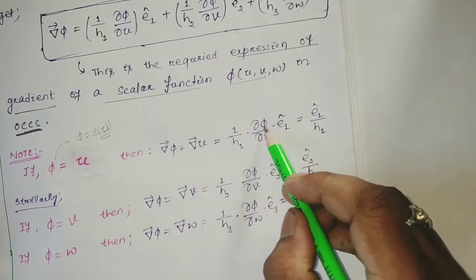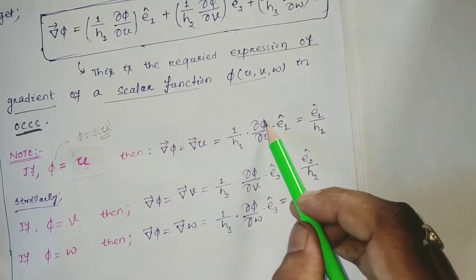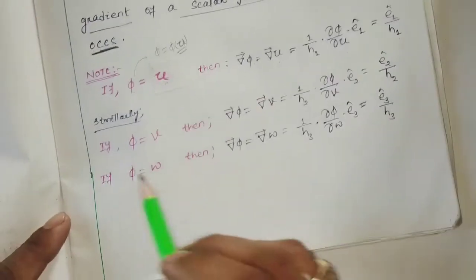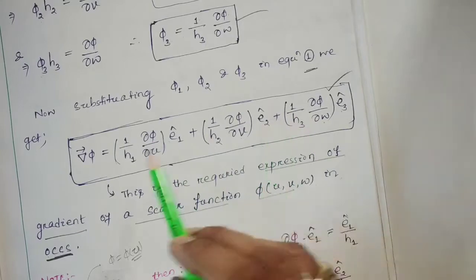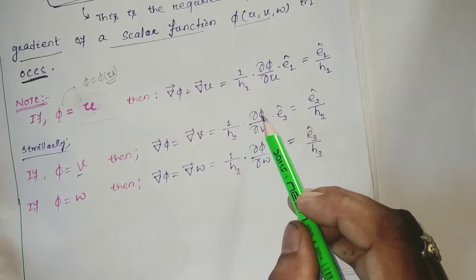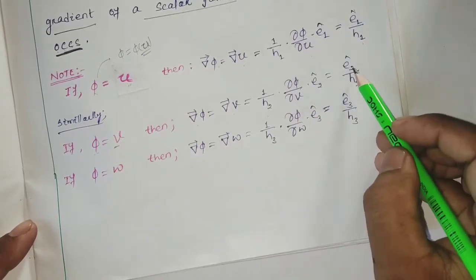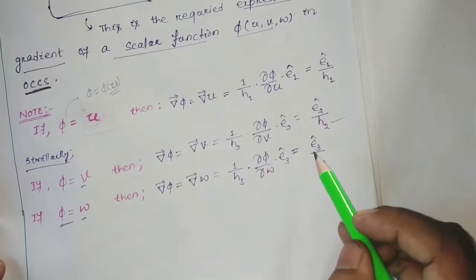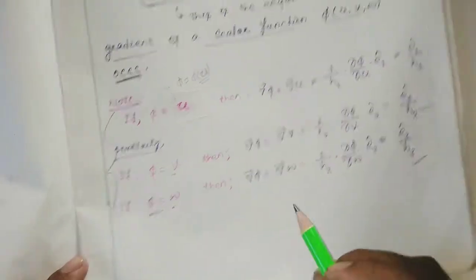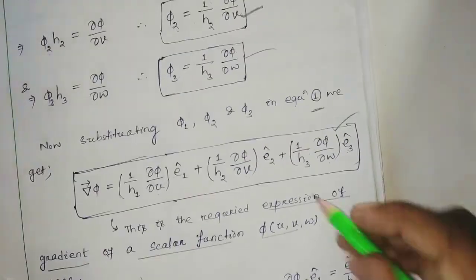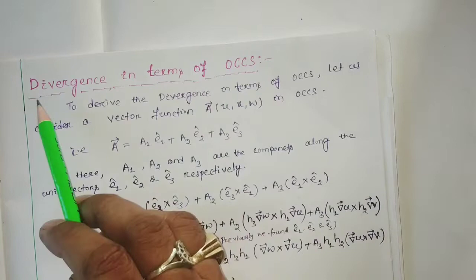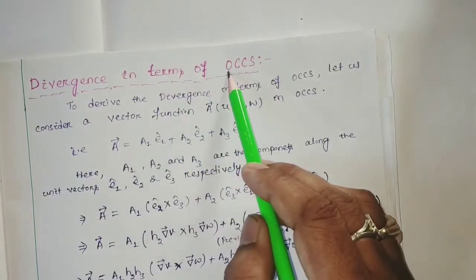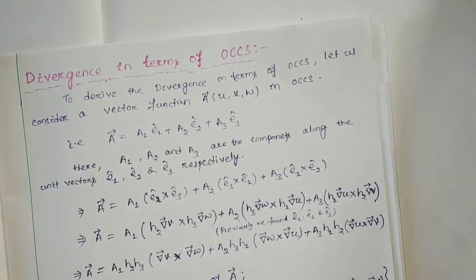Likewise, if φ = v, then del φ = del v = (1/h₂)(∂v/∂v)E₂̂ = E₂̂/h₂. And if φ = w, then del w = E₃̂/h₃. These three important results will be required in our next classes. This is the expression for the gradient of a scalar function in OCC. In our next class we are going to discuss divergence of a vector function in terms of orthogonal coordinate systems. Thank you for watching, and please write down the notes carefully and be ready for the next class.